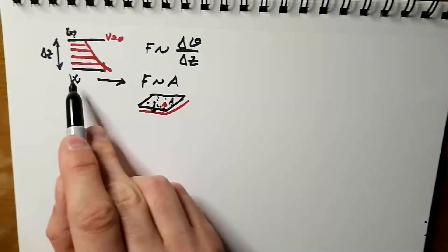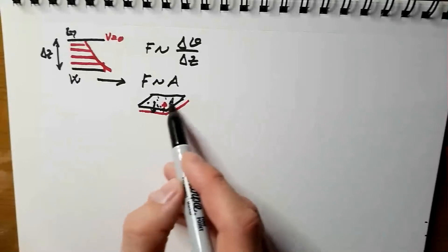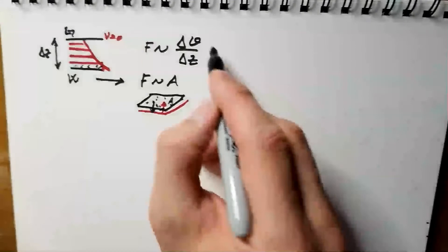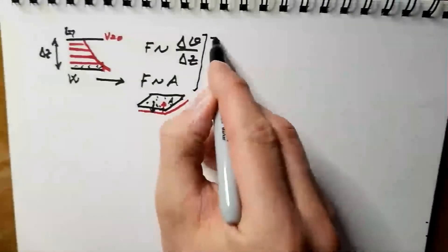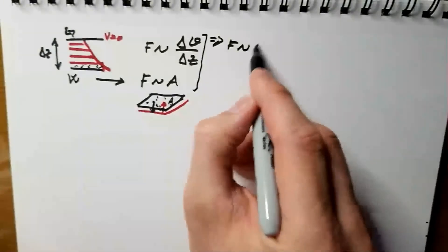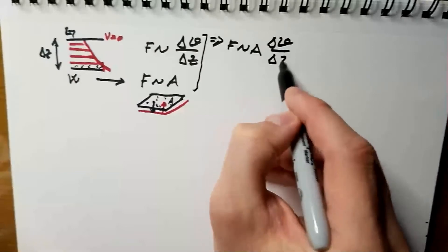In other words, if my wooden plate was very big, attraction would be higher, because there are more molecules between this layer and the wood that are attracting each other. So, these two expressions tell me that force is proportional to the area and gradient of velocity.